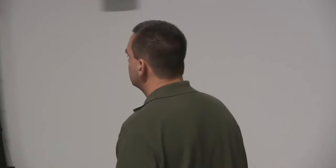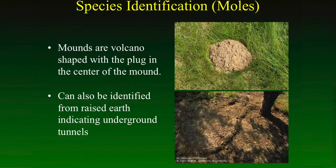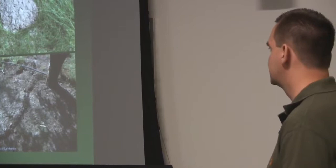Something else you can look for are these raised linear ridges. Moles create these when they're foraging just under the surface of the soil, looking for worms and grubs and those kinds of things. Moles are the only thing that will create these. So if you see these out there, you know there are moles present in that area. Now just because you have these doesn't mean you don't have gophers as well. So you still have to be able to look for both. But at least if you see this out there, you do know that moles are present in that area.